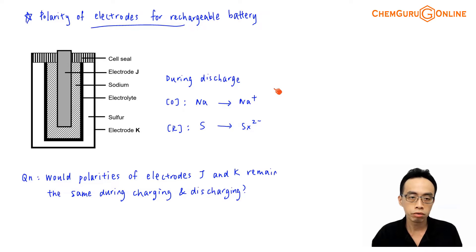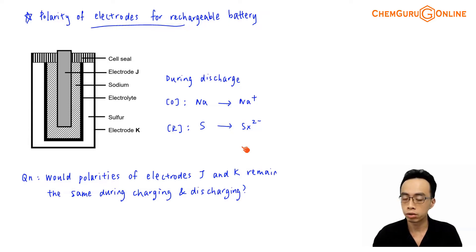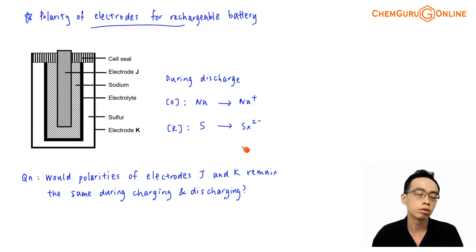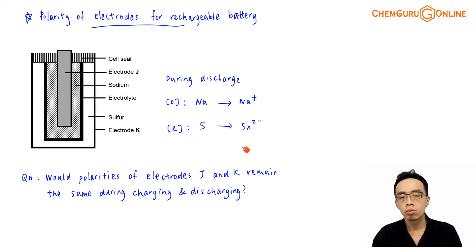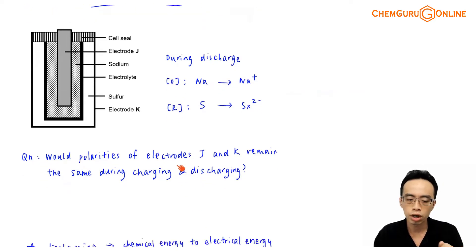Given this information, during the discharge of this rechargeable battery, sodium is oxidized and sulfur is reduced. What would happen to the polarity of electrodes J and K during the charging and during the discharging of this rechargeable battery? Would the polarities of the electrodes stay the same or would they change? We have to consider which electrode is the anode, which is the cathode, and from there we can deduce the charges — both for discharging and for charging.